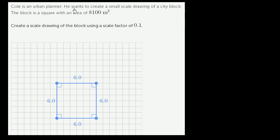Kohl is an urban planner. He wants to create a small scale drawing of a city block. The block is a square with an area of 8,100 square meters. Create a scale drawing of the block using a scale factor of 0.1.